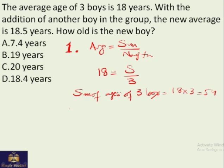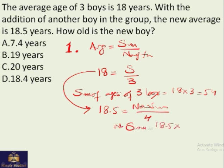And then they are saying the new average, again if you use the same formula, the new average is 18.5. The new sum over 4, which gives us the new sum equals 18.5 times 4, which is 74.